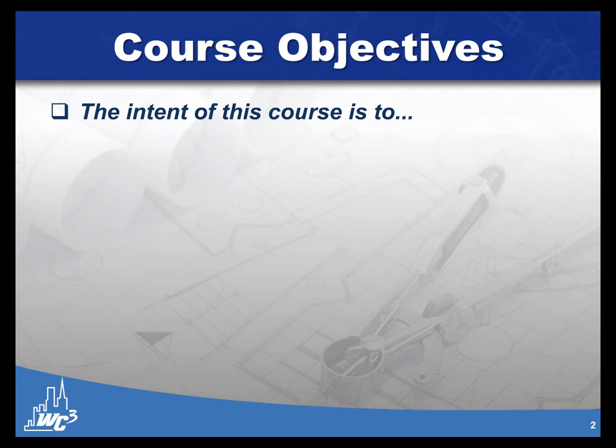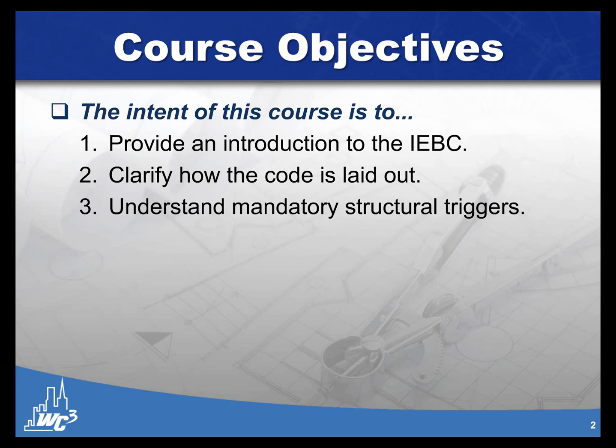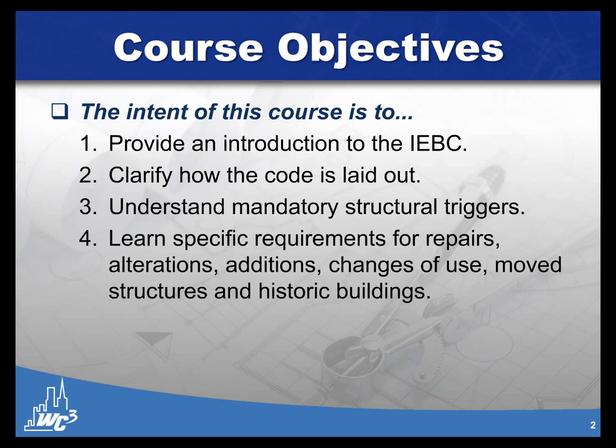The objectives of this course are to provide a general introduction of the existing building code and to clarify how the code is laid out. We want to make sure you understand mandatory structural triggers. There are a lot of triggers in the IEBC, mainly in relation to structural, fire, or accessibility. There are others in relation to means of egress, electrical, and mechanical, but they tend to be more minor items. We're going to specifically talk about repairs, alterations, additions, changes of use, moved structures, and historic buildings.